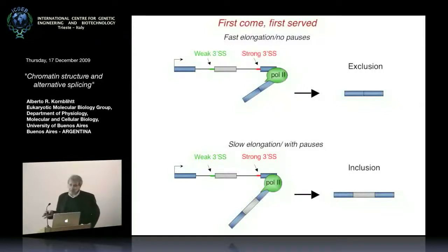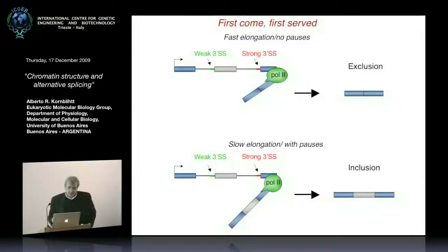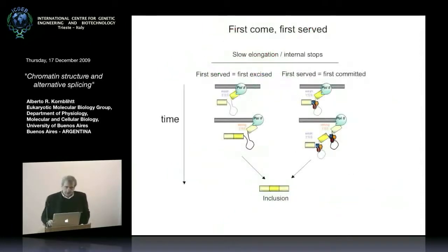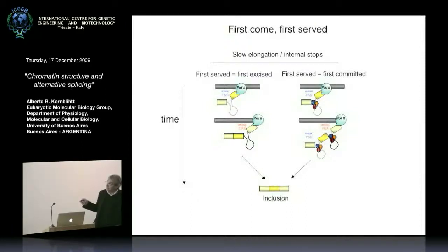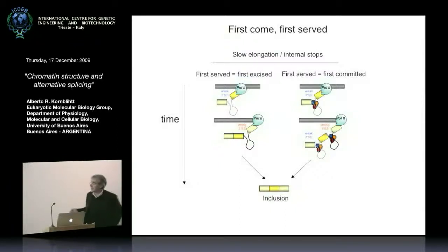This model doesn't account for exon definition, because it assumes the first intron can be spliced without the donor of the second intron being seen. We have to revisit this model, because in our system 'first served' doesn't mean 'first excised' but rather 'first committed.' Evidence now suggests that when Pol2 goes slower, it gives time for recruitment of factors that commit to splicing the first intron. Then when Pol2 proceeds, commitment of the second intron follows — consistent with exon definition — leading to more inclusion.